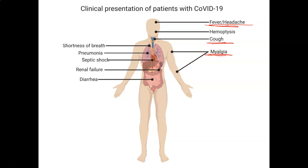Shortness of breath happens toward the middle and end stages. Pneumonia definitely toward the end stages, and then septic shock and renal failure — sometimes diarrhea during any part of the disease — but septic shock and renal failure would be at the very end phases. And everyone doesn't even get to the pneumonia stage, and if they do, sometimes it's just mild pneumonia.